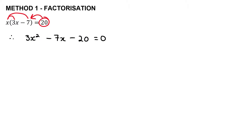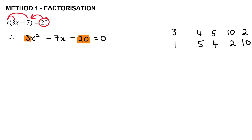To factorize, write down the factors of the coefficient of x squared (which is 3: factors are 3 and 1) and the factors of the constant (20: which could be 4 and 5, 5 and 4, or 10 and 2). Cross multiply: 3 times 5 is 15 and 1 times 4 is 4. Also place your two brackets. Since the constant is negative, one bracket has a plus and the other a minus.